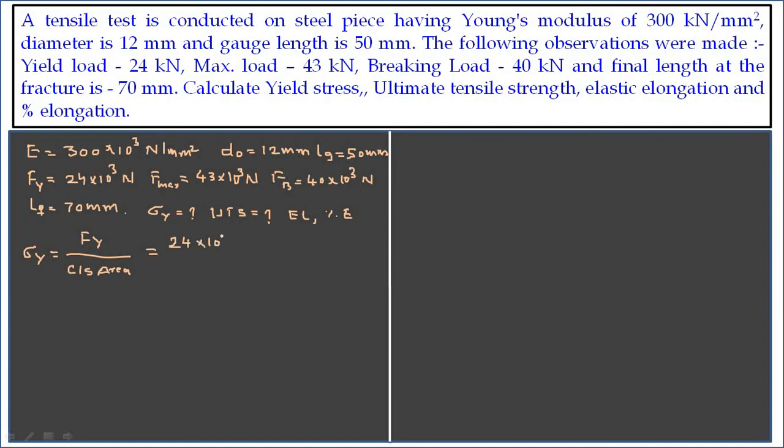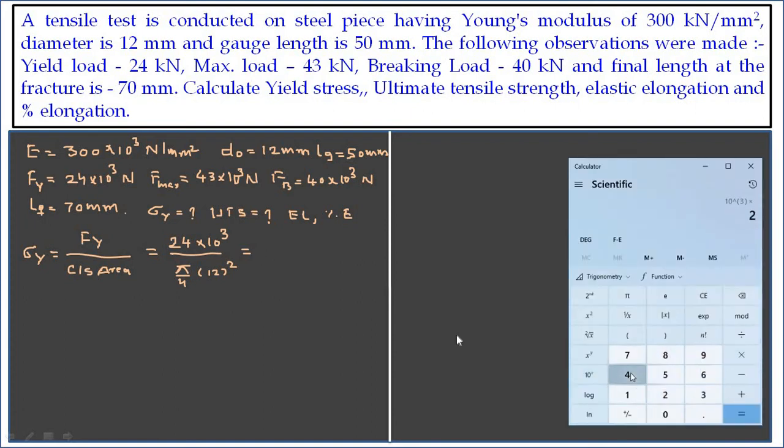Let us substitute the values here. That is 24 into 10 raise to 3, divided by pi by 4 into the original diameter 12 squared. Let us see how it is calculated. 10 raise to 3 multiplied by 24 divided by pi into 12 square, and it is divided by 4. So you are going to get a value of 212.2 Newton per mm square.